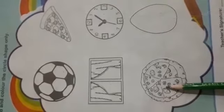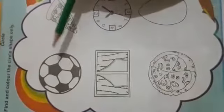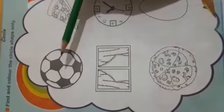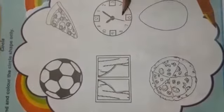Now you color only the circle shape. Ball, clock, and pizza. This is your class work. Next page is your homework. Number one, write the missing numbers.